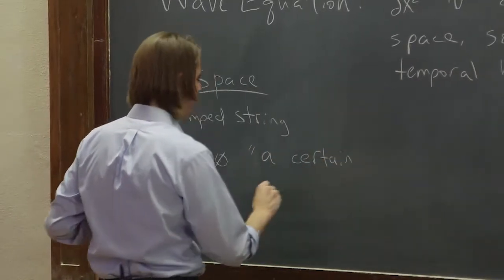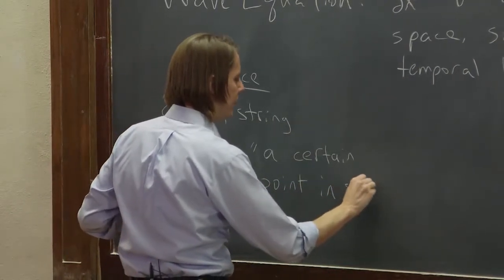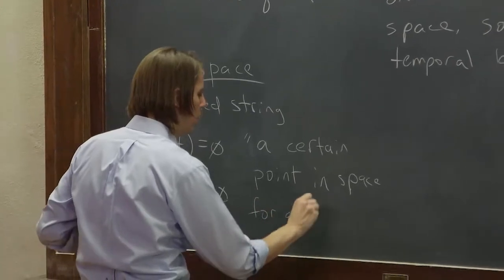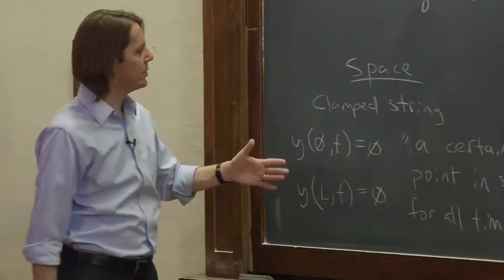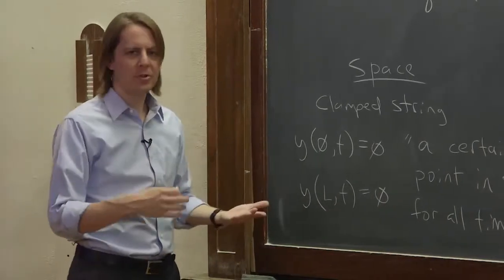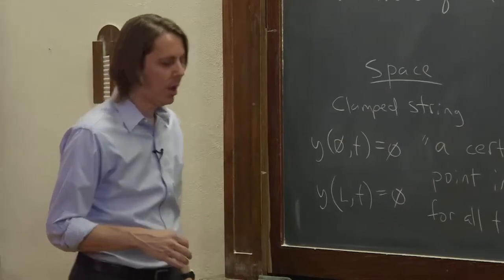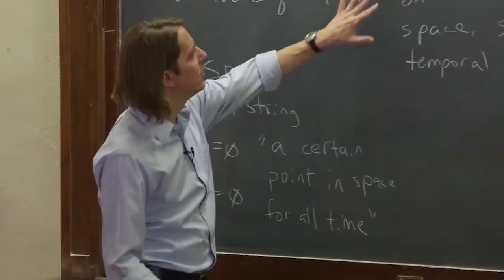I like to do that so much, I couldn't remember it. I had to read it. A certain point in space for all time. Because that's what it is. It is a boundary condition. Initial conditions and boundary conditions are really the same thing. It's a condition, a certain point in space at all time. Now, let's look at time. So there's two. We got that covered.